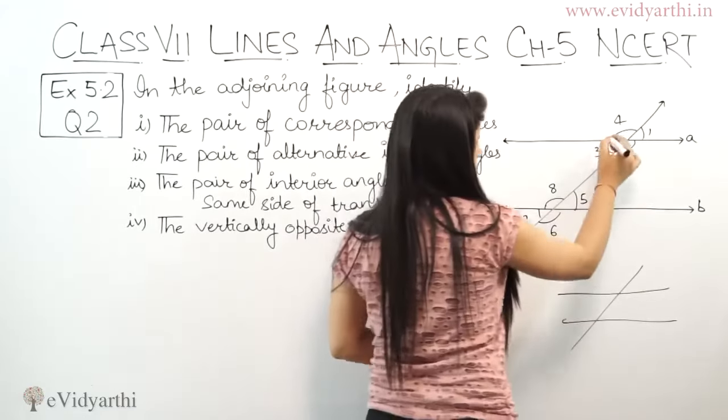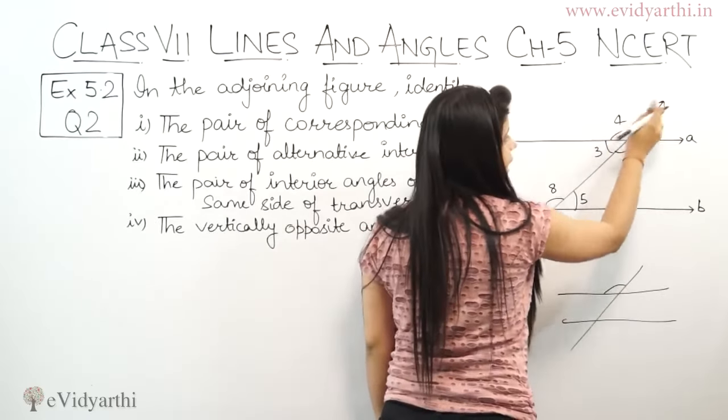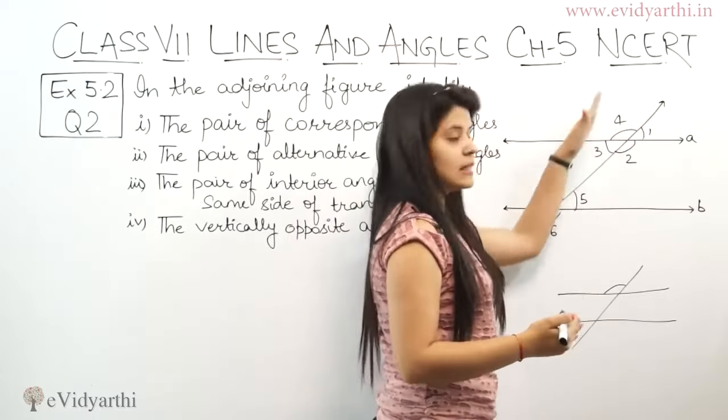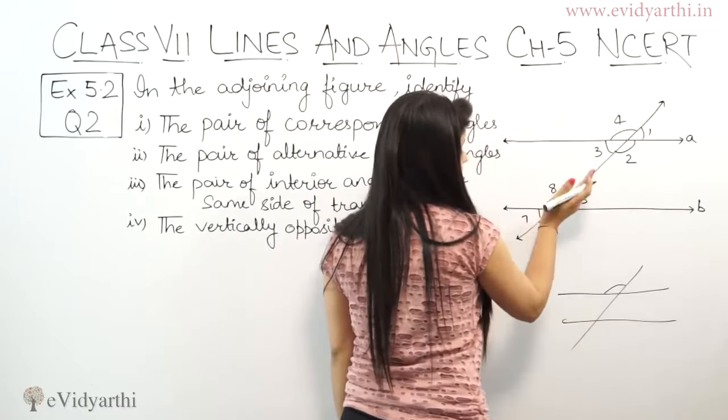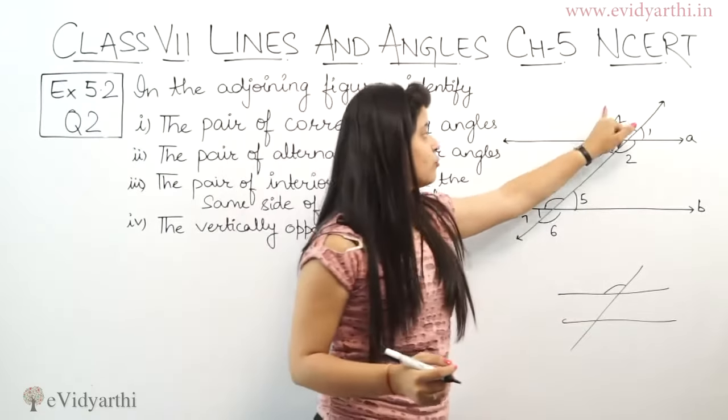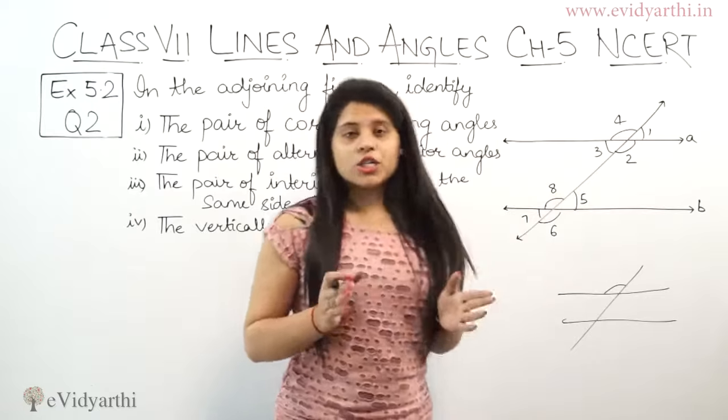Let's start with angle number 4. It's here, on this side of the parallel line and transversal - above the parallel line and on this side of the transversal. Similarly, above the parallel line and on this side of the transversal, which angle is there? Angle number 8. So angles 4 and 8 are at the same position, so these are corresponding angles.